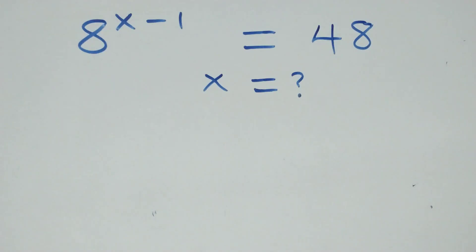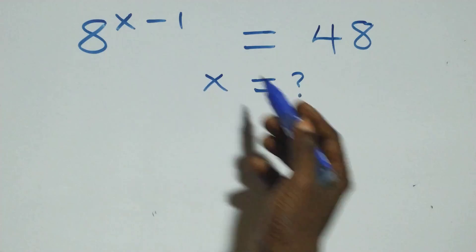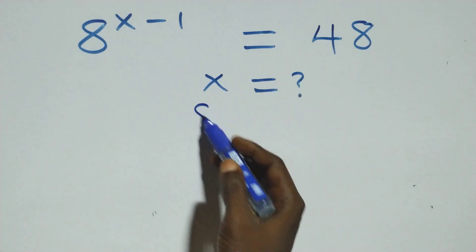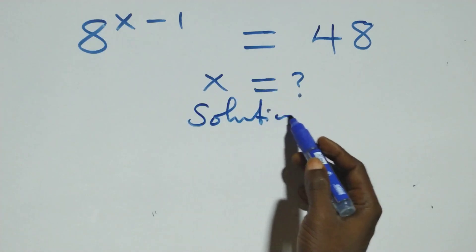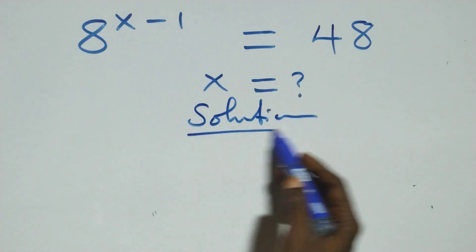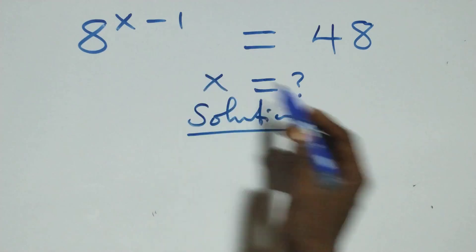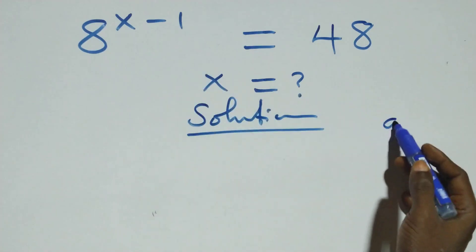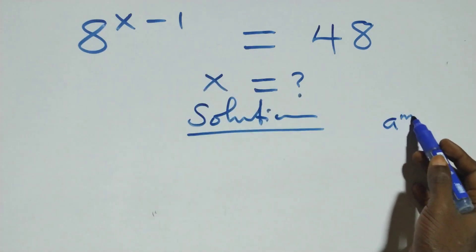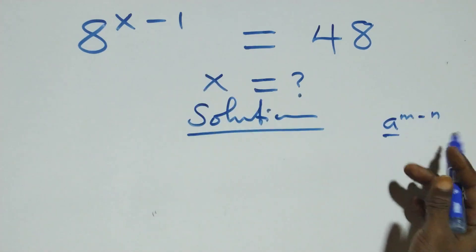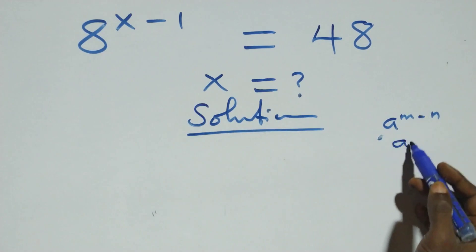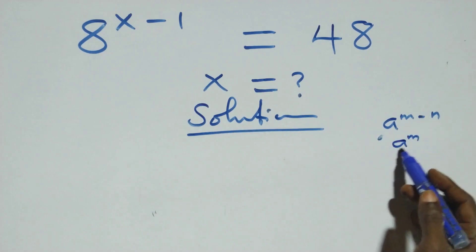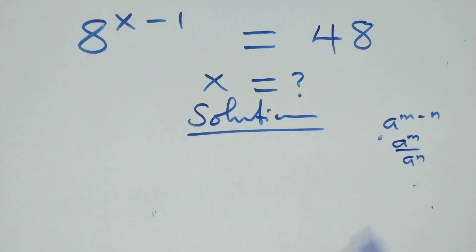Hello, you are welcome. How to solve this nice exponential equation. From what we have here, this follows: a raised to power m minus n is the same thing as a raised to power m over a raised to power n.